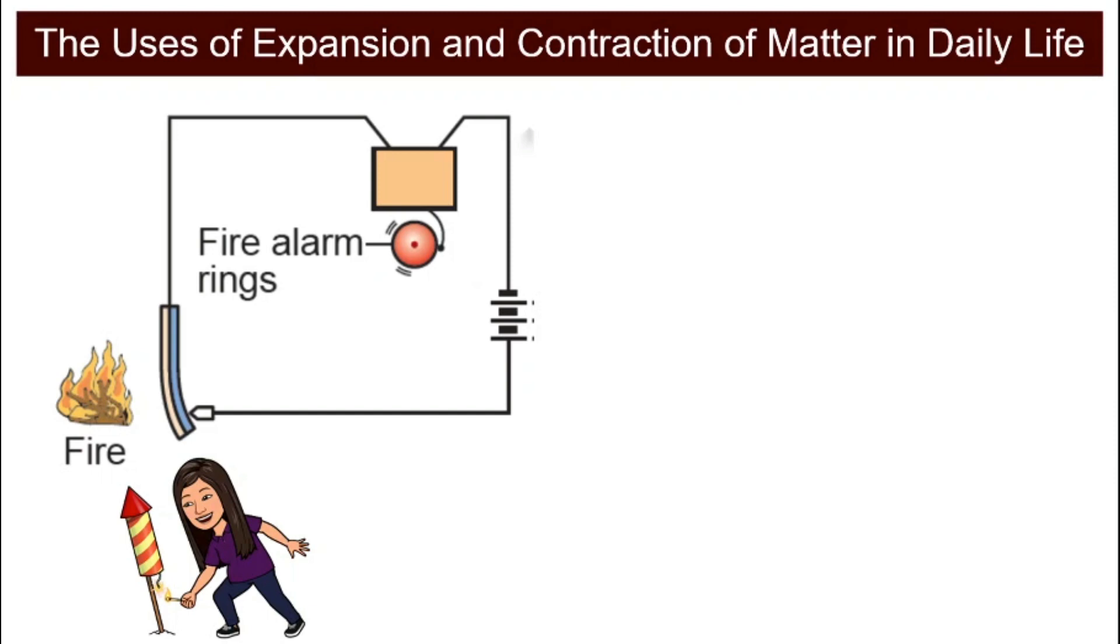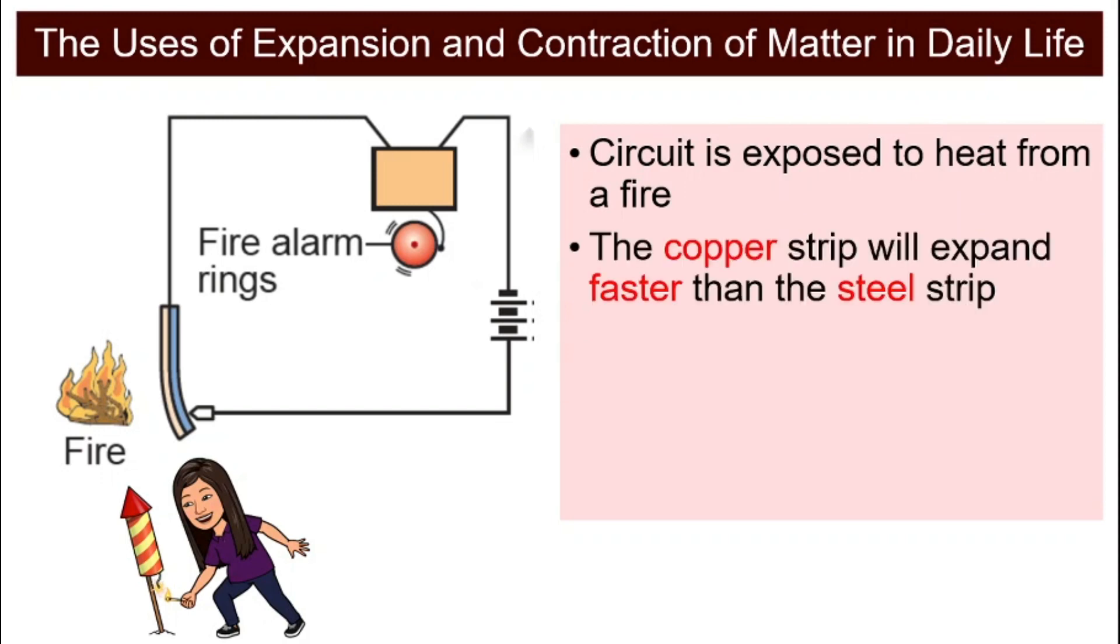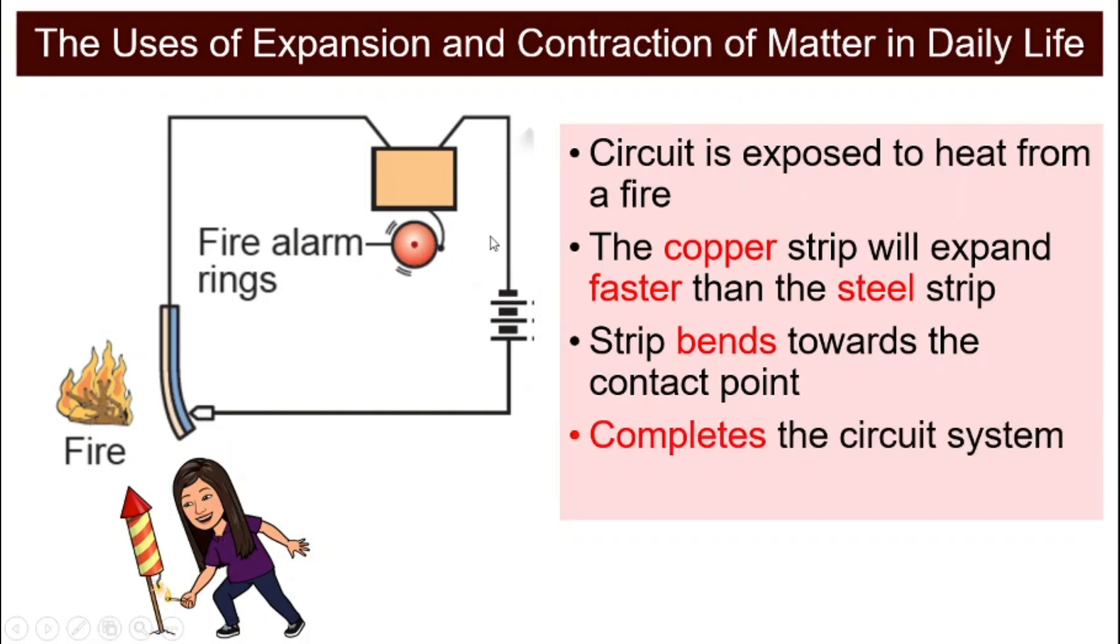But when fire happens, the fire alarm should ring. How does that happen? The circuit that is exposed to heat from a fire will begin to expand. But because we are using bimetallic strip, the copper will expand faster and more than the steel, causing the strip to move or bend towards the contact point. When they bend enough, it will touch the contact point and complete the circuit system. When the circuit system is completed, then the alarm will ring because the current starts to flow and causes the fire alarm to work.